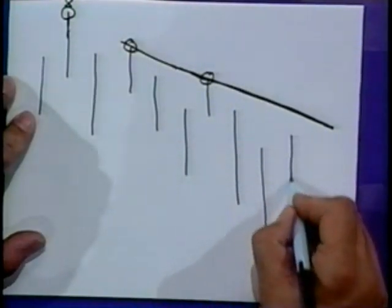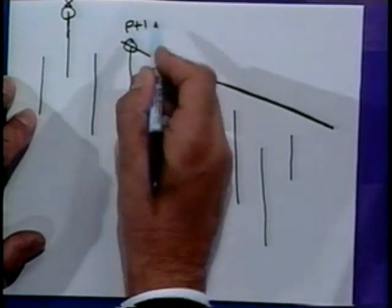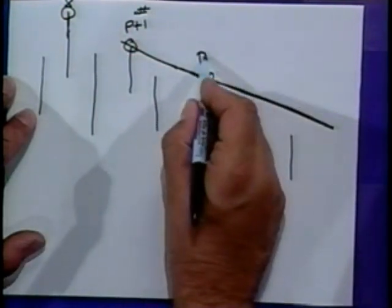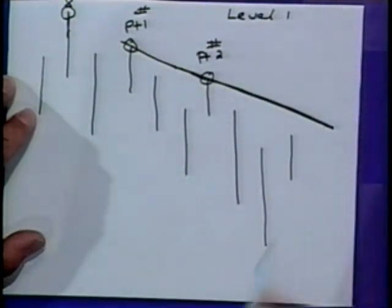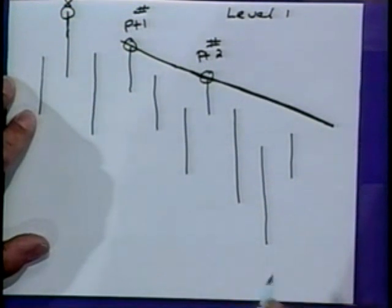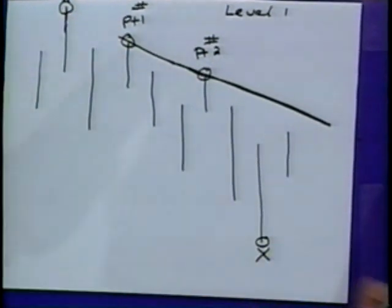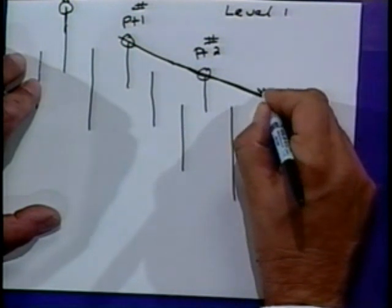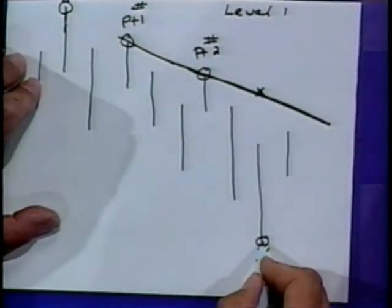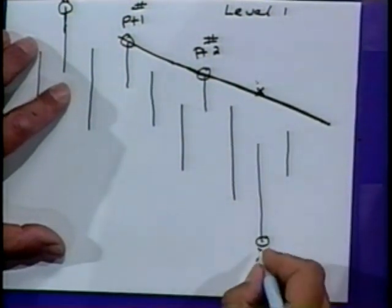Once I constructed the trend line, I observed the lowest price movement below that trend line — from point number one to point number two, level one, extended into the future. I would identify the lowest price point, then go to the trend line immediately above it and calculate the difference between the value on the trend line precisely on that day and that particular low.